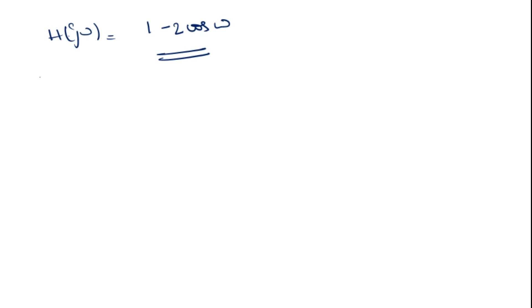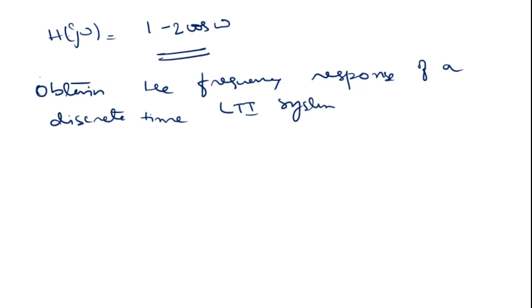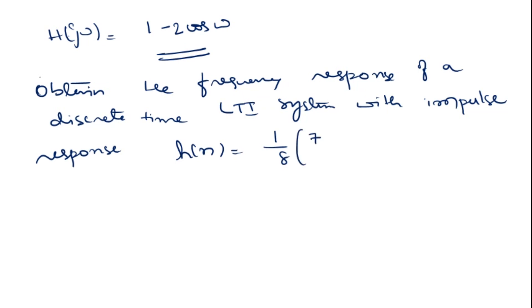Next problem: obtain the frequency response of a discrete time LTI system with impulse response H(n) = (1/8) × (7/8)^n × u(n).